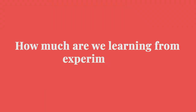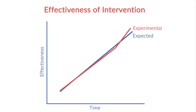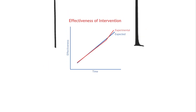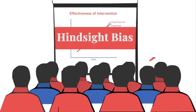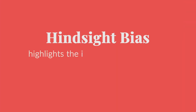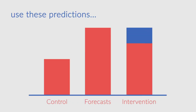A related question is: how much are we learning from experiments? This question can be challenging to answer since many results seem obvious after the fact — sometimes referred to as hindsight bias. This highlights the importance of collecting predictions before results are known and hindsight bias has set in. We can use these predictions to help quantify how much new information studies are providing.